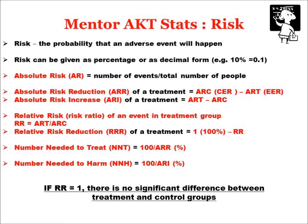We have other measures to inform patients around risk: numbers needed to treat and numbers needed to harm. If a treatment is reducing risk, I can calculate the NNT — the number of people I need to treat over a period of time to prevent one bad thing from happening. It's the reciprocal of the ARR: 100 divided by the ARR if it's a percentage, or 1 divided by it if it's a decimal. If the treatment is causing harm, we use numbers needed to harm, which is the reciprocal of the ARI. Because relative risk is a ratio, if it equals 1, there's no difference in risk between the treatment and control groups.